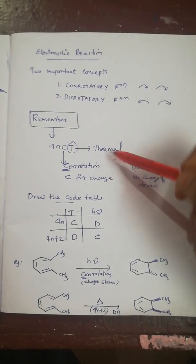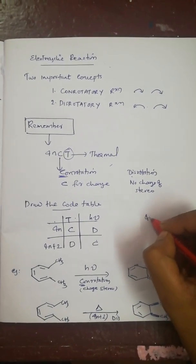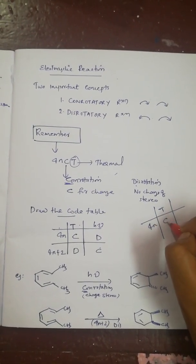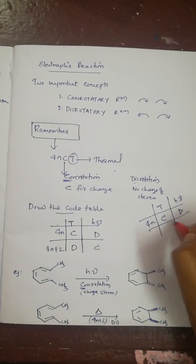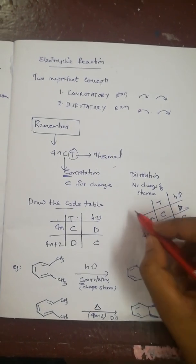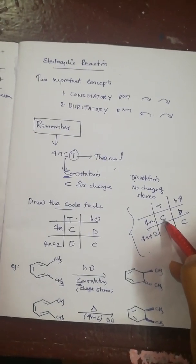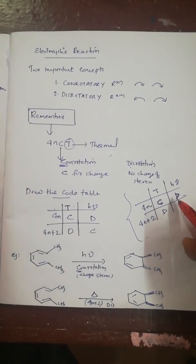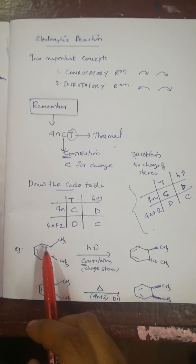You can draw a simple table to remember the code. For 4n electrons: thermal → conrotatory (C = change stereo); light → disrotatory (D = no change in stereo). Then write alternating C, D, C, D. So for 4n+2 pi electrons: thermal → disrotatory, light → conrotatory. D means no change in stereo, C means change.